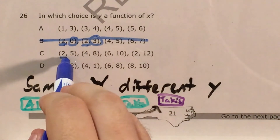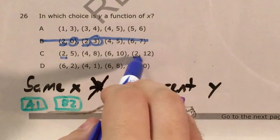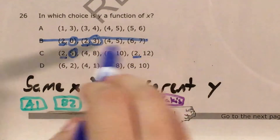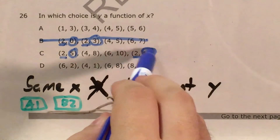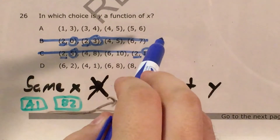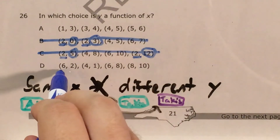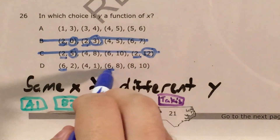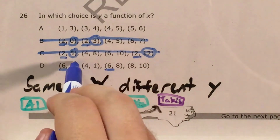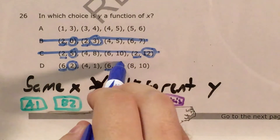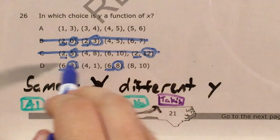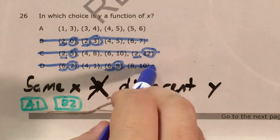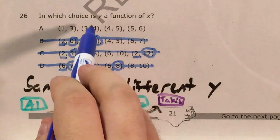For choice C, I have an x of two appearing twice giving me different numbers — five and twelve — that's what I don't want. For choice D, I have an x of six coming up twice: one time it gives me two, the other time it gives me eight. That's what I don't want, so I know that D is not a function either.